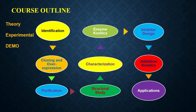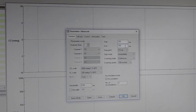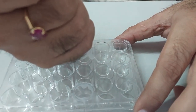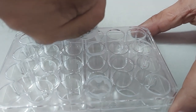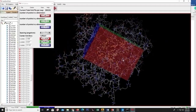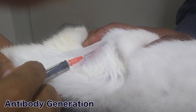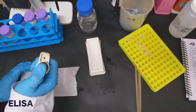The course Enzyme Science and Technology is divided into 12 modules. In these 12 modules, I have tried to cover the theory of each particular topic, followed by experimental details on how you can perform particular experiments or enzyme assays. We have also tried to show more and more demos so that you can have virtual hands-on experiences.